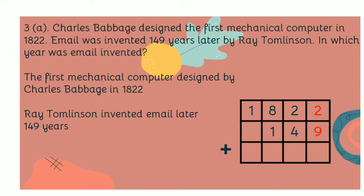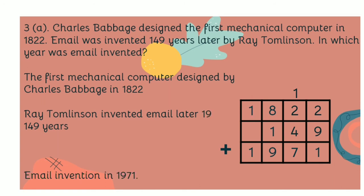2 plus 9 is 11 — you put 1 down, 1 up. 1 plus 2 is 3. 3 plus 4 is 7 — you put 7 down. 8 plus 1 is 9. Here there is no number below that 1, so you take it and write 1 down. Email was invented in 1971.